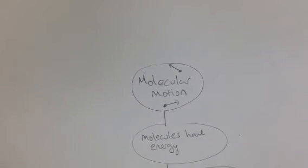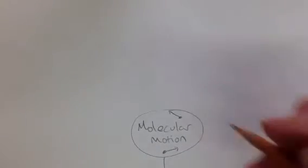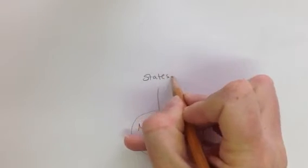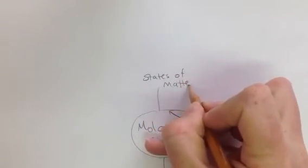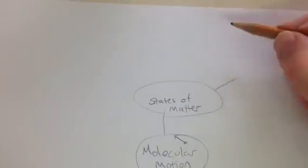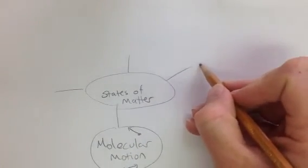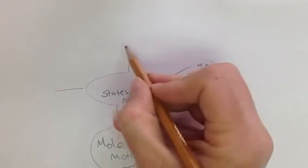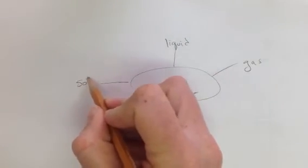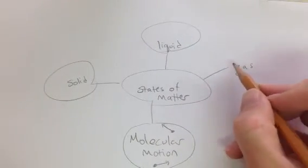So let's think about something else that we are expected to know, and that was this idea of states of matter. So maybe on top of my molecular motion, let's talk about states of matter. And I know that I've got three different main states of matter that we've talked about in class. So maybe I've got gas over here, and I've got liquid right here, and I've got solid right here, and I'm going to define the space for those.